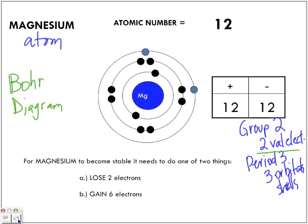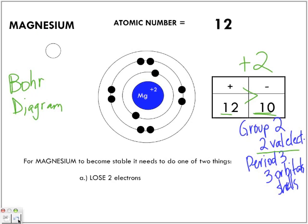For magnesium to become stable, it needs to do one of two things: either lose those two electrons or gain six electrons. Which one is more energetically favorable? It's more likely to lose those two electrons. Now our count is no longer 12 to 12 — we have 10 electrons. We have more protons than electrons — two more. So the charge associated with magnesium is plus two. This is now a magnesium ion because it has a plus two charge.